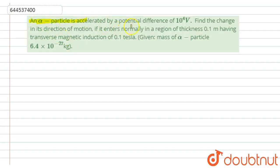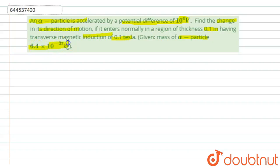An alpha particle is accelerated by a potential difference of 10⁴ volts. Find the change in its direction of motion if it enters normally into a region of thickness 0.1 meter having a transverse magnetic induction of 0.1 tesla. The mass of the alpha particle is given as 6.4 × 10⁻²⁷ kg.